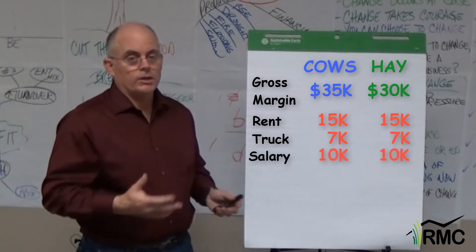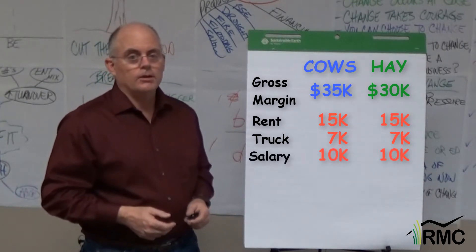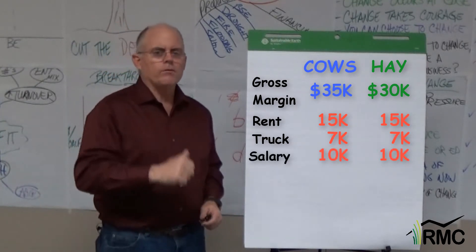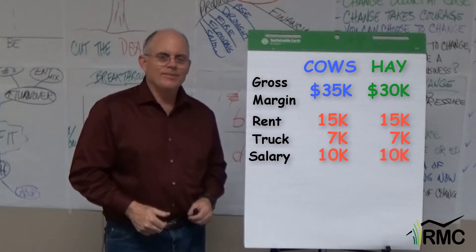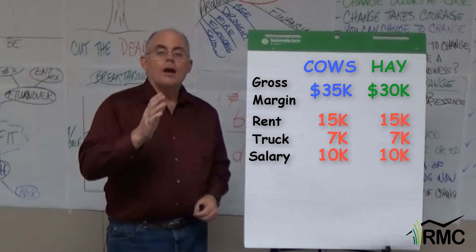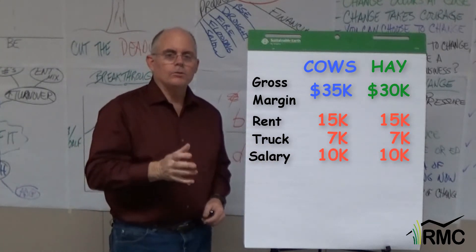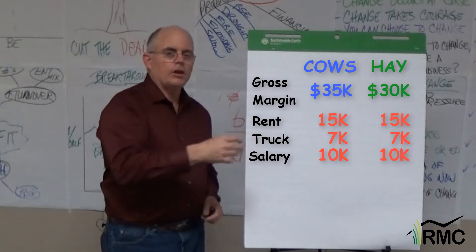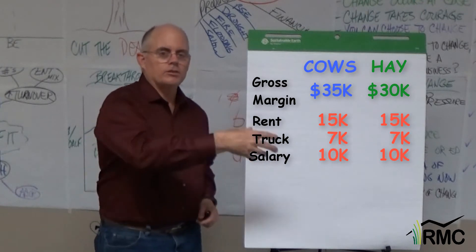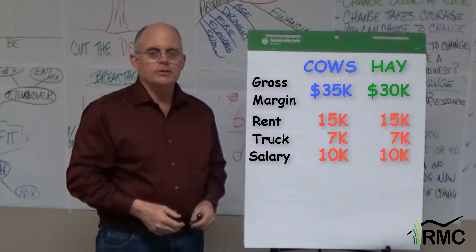I pay myself $20,000 a year, and I'm worth every penny of it. I work half in the cattle and half in the hay, so I'm going to split that cost — $10,000 to cows and $10,000 to hay.